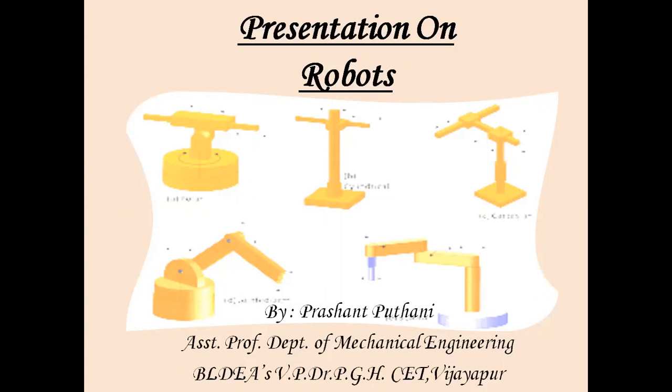In this particular chapter we will be discussing regarding what are robots, how they are working, the anatomy of robots, the different configurations where robots can work effectively, their advantages, disadvantages, as well as applications of robots. We shall see all of them one by one.